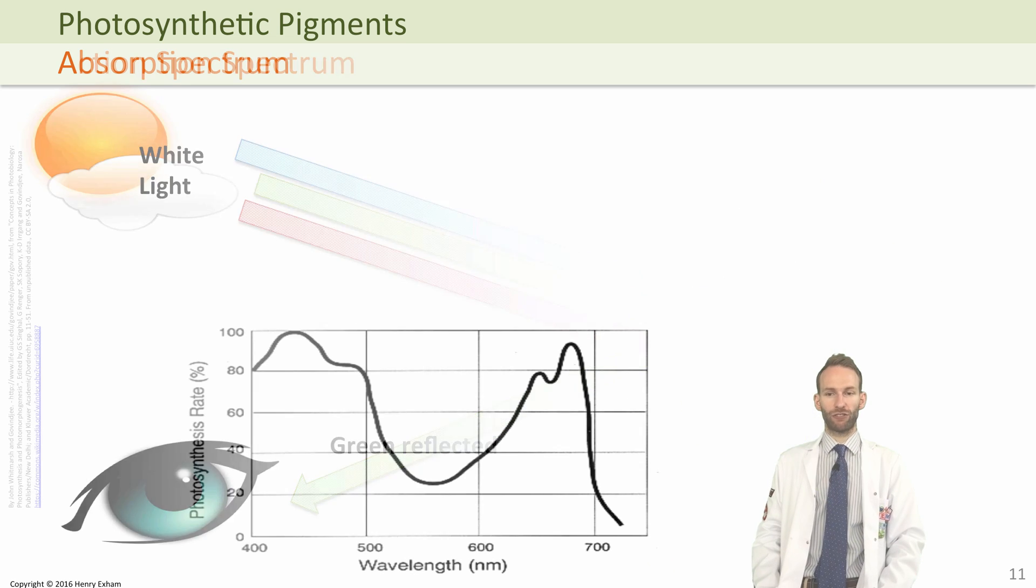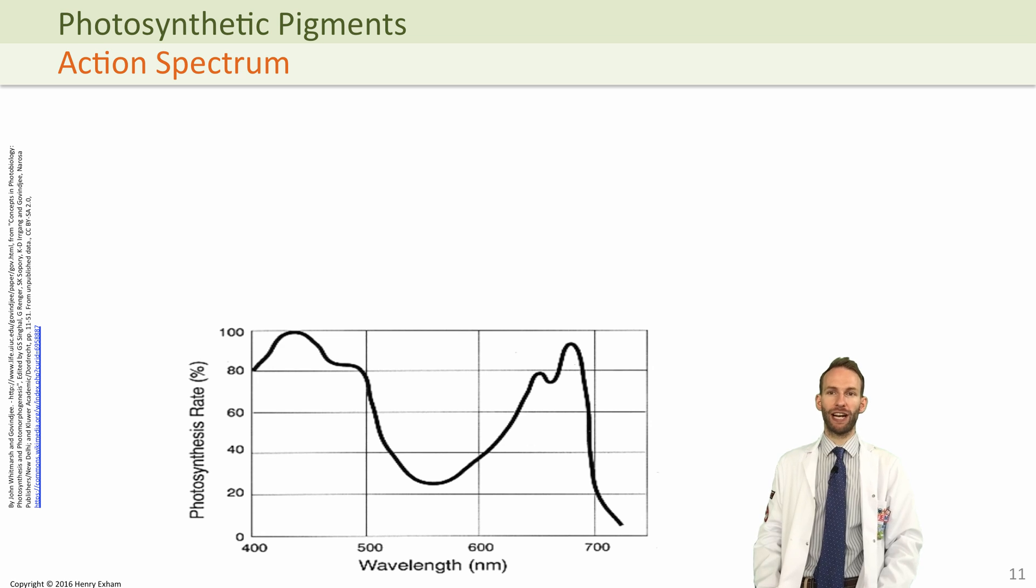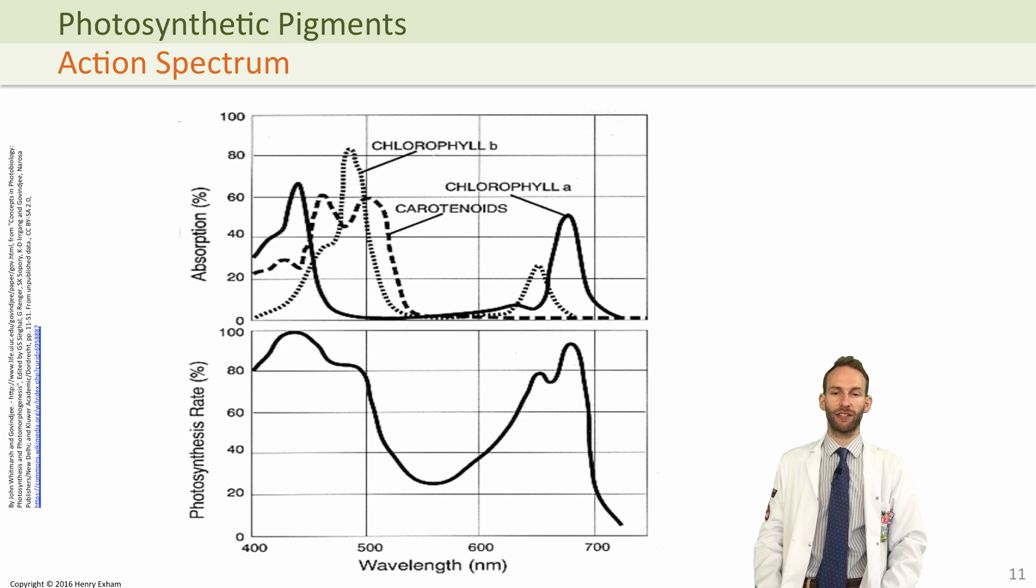Now the action spectrum shows you how fast a plant is photosynthesizing at different wavelengths of light. And unsurprisingly, there is a pattern or a correlation between this and the absorption spectrum of these pigments.